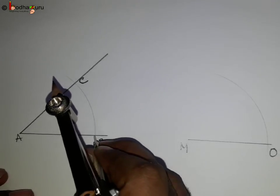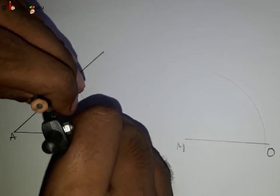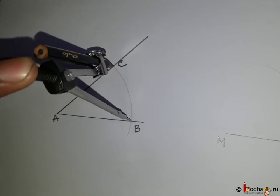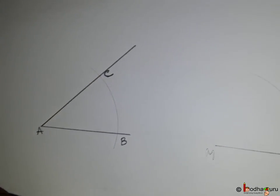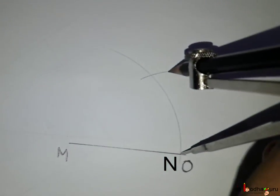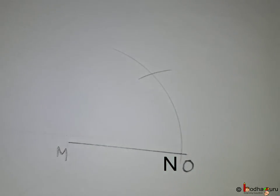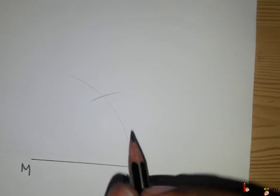Now, set your compass with BC as its radius. Put the needle of the compass on point N. Make a cut on the previous arc. Say the two arcs intersect at point P.